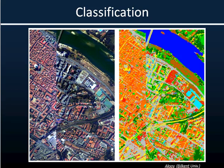The most common actual processing technique done with remote sensing imagery is classification. The goal is to categorize the pixels we have into themes that are based on their spectral information or spatial patterns. The assumption is that the same features on the ground are going to have similar reflectance values, so we can group or cluster them into classes of similar features.